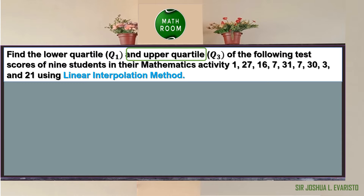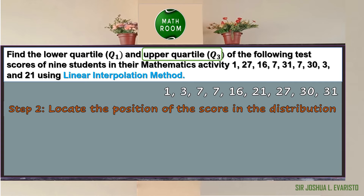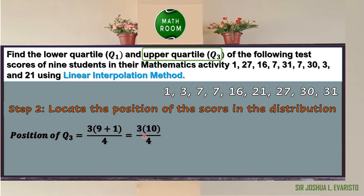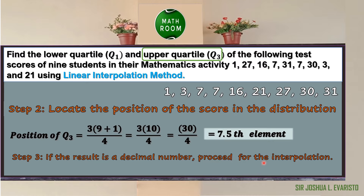Next, let us solve the upper quartile Q sub 3. We proceed to step 2 to locate the position. Using the formula Q sub k = k(n+1)/4, the position of Q sub 3 = 3 × (9 + 1) / 4, with k = 3 and n = 9. Computing: 9 + 1 = 10, 3 × 10 = 30, 30 ÷ 4 = 7.5. Since the result is a decimal, interpolation is needed.